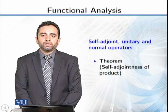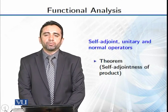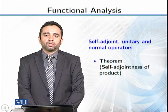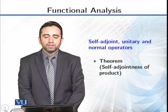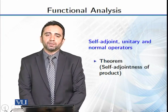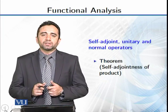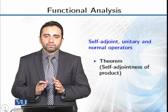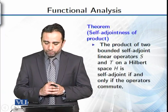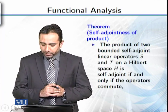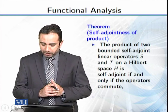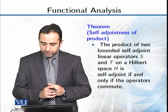Dear students, we discuss self-adjoint operators, unitary operators, and normal operators — their different properties. Before we discuss results, we have a very short result about the self-adjointedness of a product. The statement is that the product of two bounded self-adjoint linear operators S and T on a Hilbert space H is self-adjoint if and only if the operators commute.